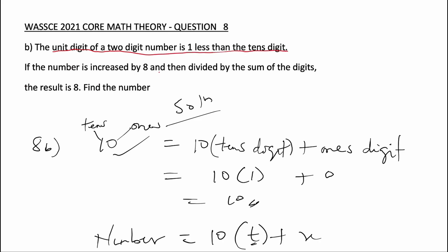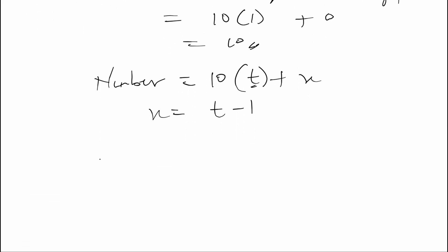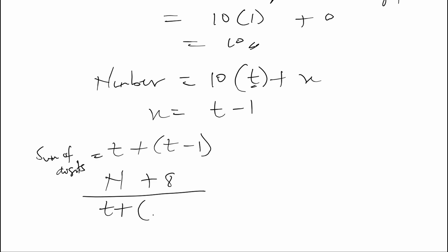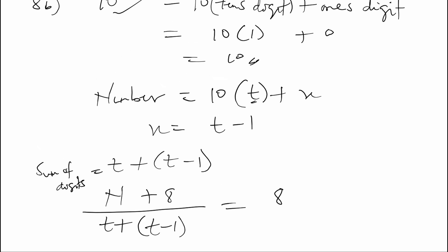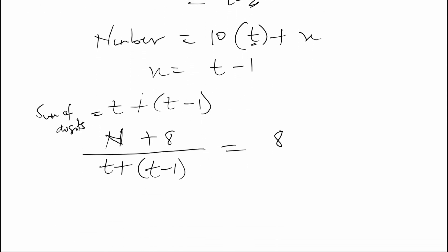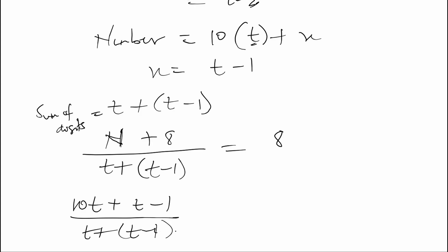If the number is increased by eight and divided by the sum of the two digits, the result is eight. The sum of the digits is t plus (t minus 1). Our number is 10t plus x, which is t minus 1. So the equation is: (10t + (t minus 1) + 8) all over (t + t minus 1) equals 8.